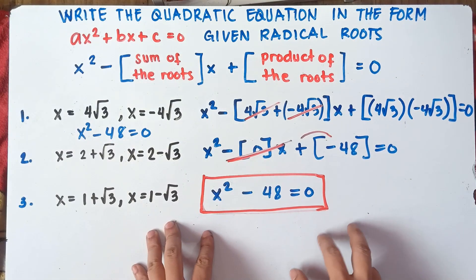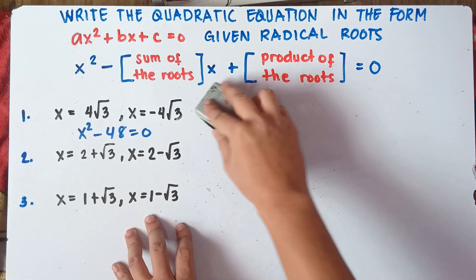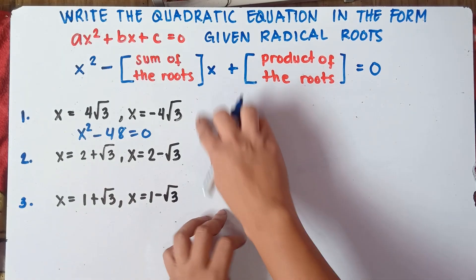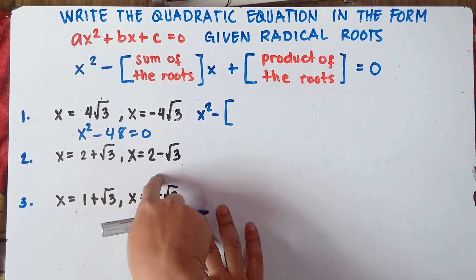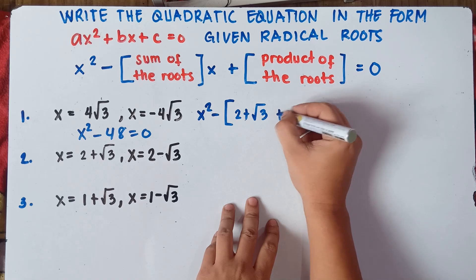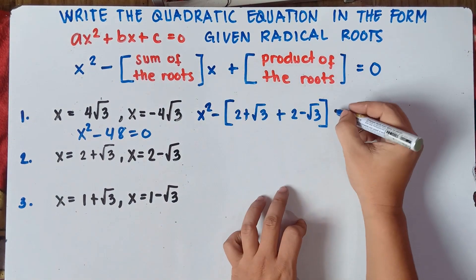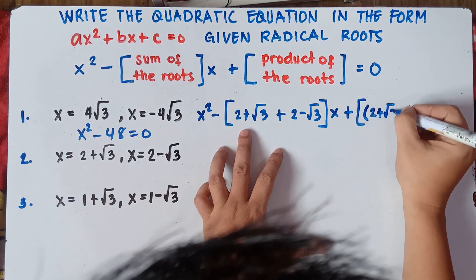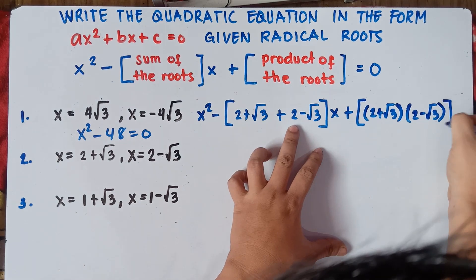I hope you understand number 1. Let's try number 2. You try to answer number 3 — put your answer in the comment section down below. So let's try number 2. Once again, you copy x squared. So simply copy x squared minus, then bracket the sum — you need to add these two roots: 2 plus square root of 3, plus 2 minus square root of 3. Put the bracket, then times x plus their product. So put a parenthesis: 2 plus square root of 3 multiplied by 2 minus square root of 3, close bracket equals 0.